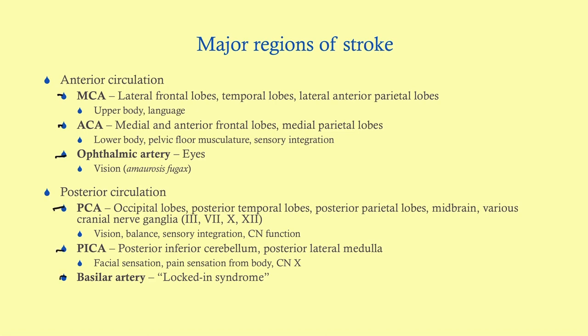MCA stroke is the most common stroke — it affects the upper extremities more than the lower extremities and can interfere with language. There are two types: superior division and inferior division. ACA stroke affects the lower extremities more than the upper extremities, and that area is also responsible for pelvic floor musculature, so an ACA stroke can cause urinary incontinence.